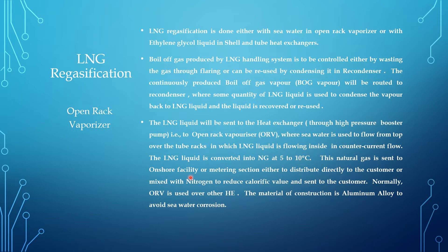The natural gas is then sent to onshore facilities or metering injection — either distributed directly to the customer, or mixed with nitrogen to reduce calorific value for use in furnaces. The ORV is preferred over other heat exchangers because it is cheap and best for use in Gulf area and FSRU ships where seawater is abundantly available. The tubes are made of aluminum alloy to avoid seawater corrosion.